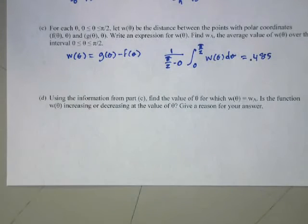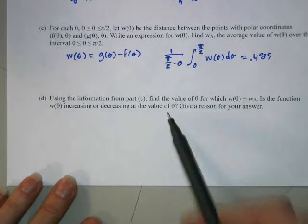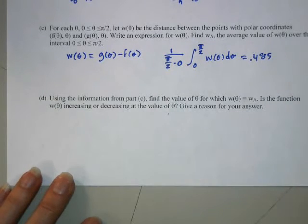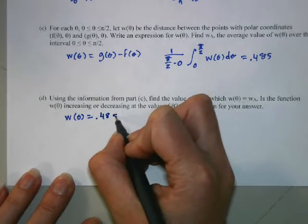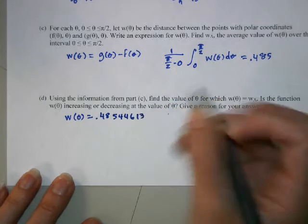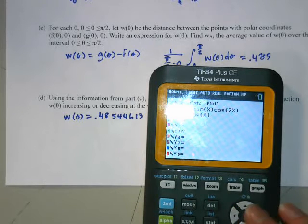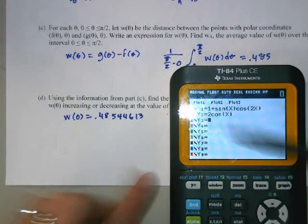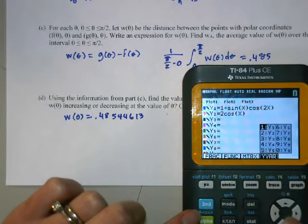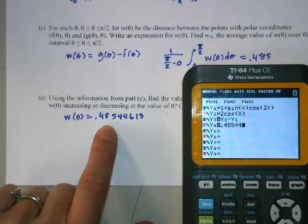The last part of this problem: use the information from part C to find the value of theta where the function w equals the average value, then determine if w is increasing or decreasing there. We're looking for where w(theta) equals 0.48544613. I'll graph y2 minus y1 and the horizontal line at that value, with the window from 0 to pi over 2 for x and 0 to 1 for y.